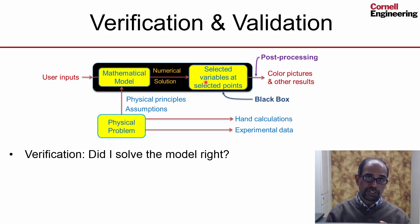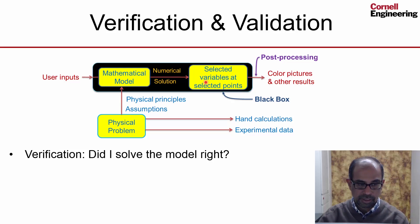There are three categories of checks that one can do. The first is to check if the results are consistent with the mathematical model. For instance, the color pictures are consistent with the mathematical model. The behavior at the boundaries, is it consistent with the boundary conditions in the mathematical model? The physical principles in the mathematical model, say equilibrium in a structural case, so you check in your results if the structure is in equilibrium to a reasonable level. In a fluid mechanics problem, the physical principle might be conservation of momentum, so you're checking if momentum is conserving your results, and so on.